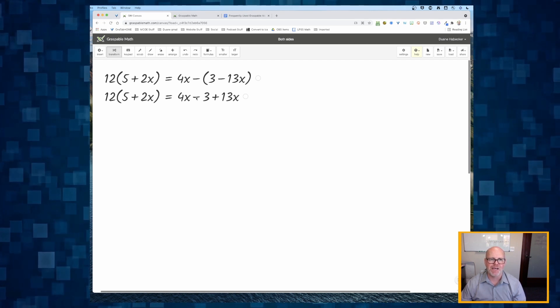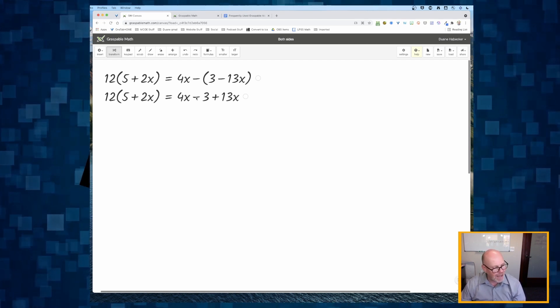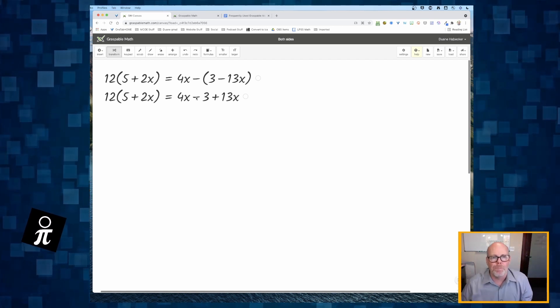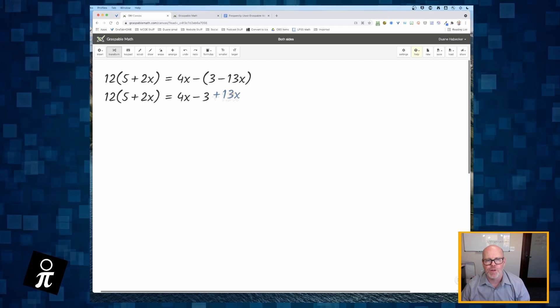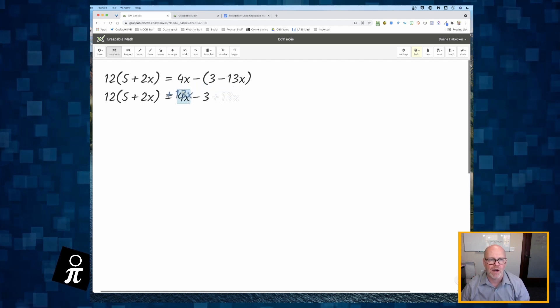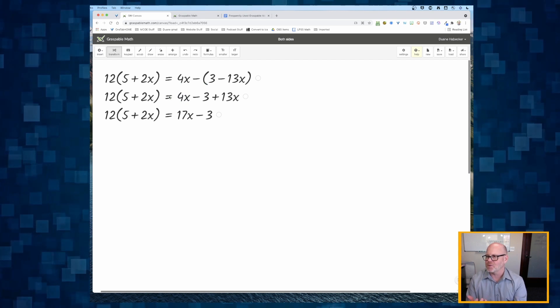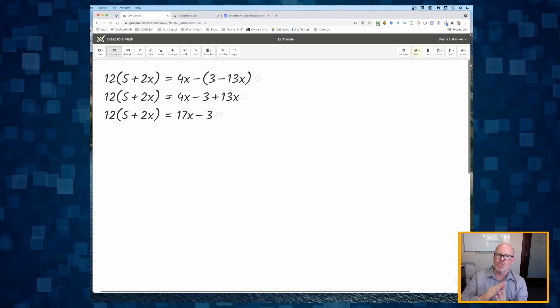And if I click on this minus sign right here, it says no, you are not allowed to simplify the 4x minus 3. But if I click on this plus sign for the plus 13x and drag it on top of the 4x, now I get 17x minus 3. I was able to do that portion.